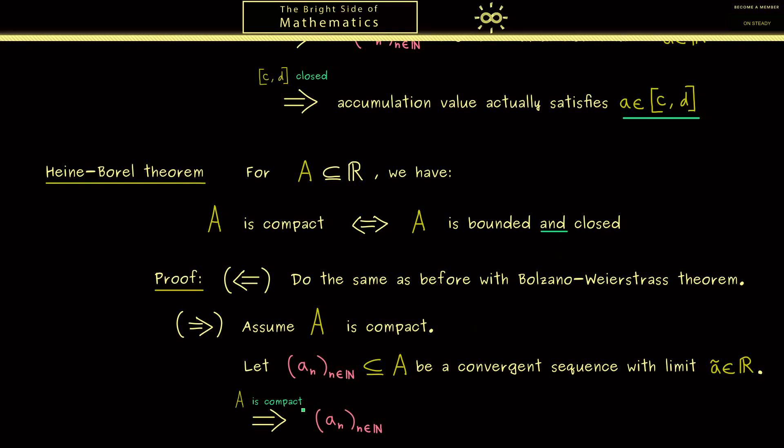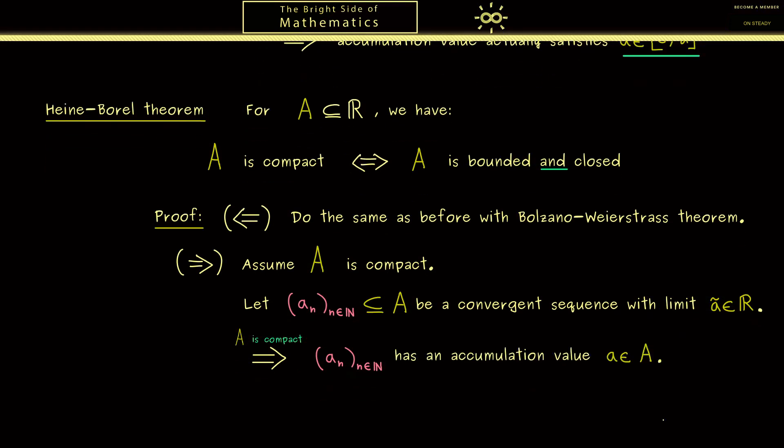Ok so at this point we can use that A is compact. Because it tells us that the sequence aₙ has an accumulation value. And as before let's call this accumulation value just a. And now we already know a convergent sequence can only have one accumulation value. Hence our limit Ã is the same as a. And therefore also an element in our set A. So the set A is closed.